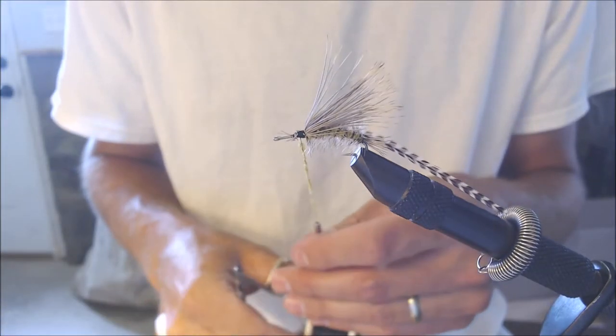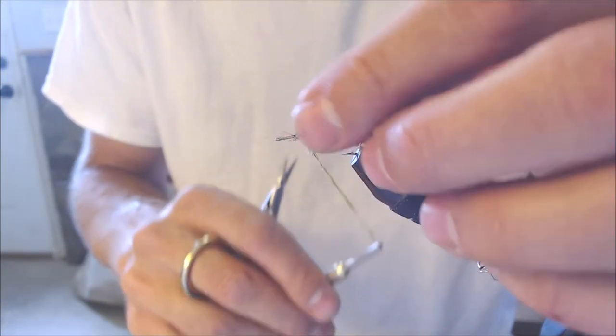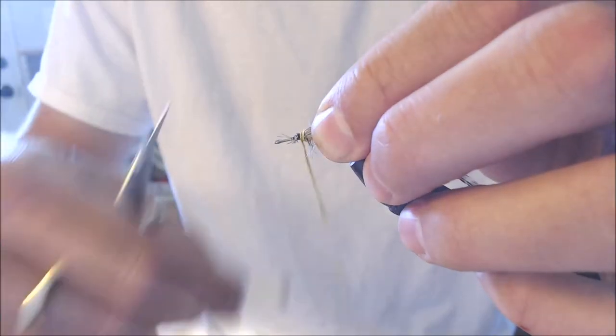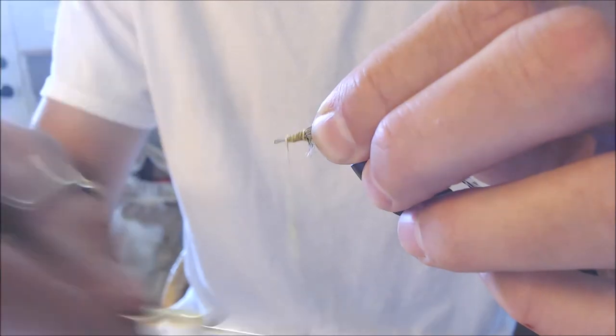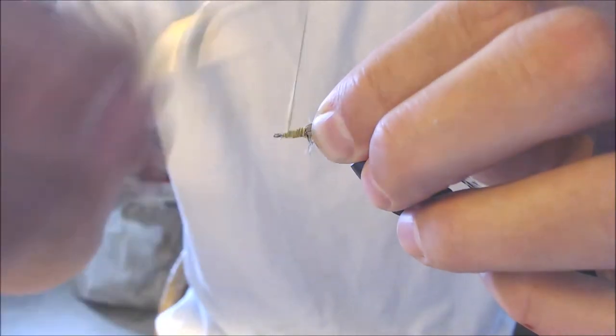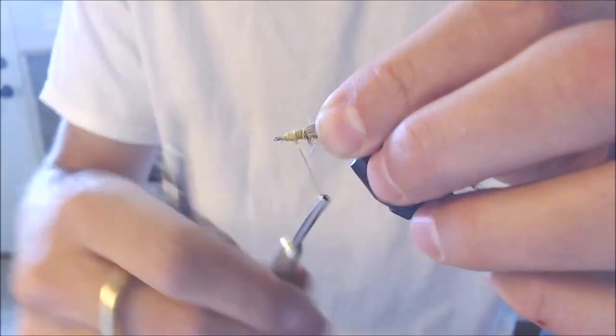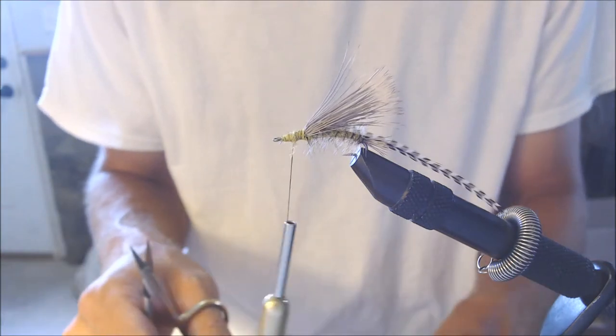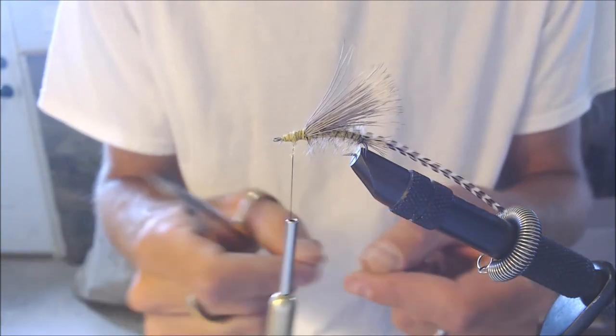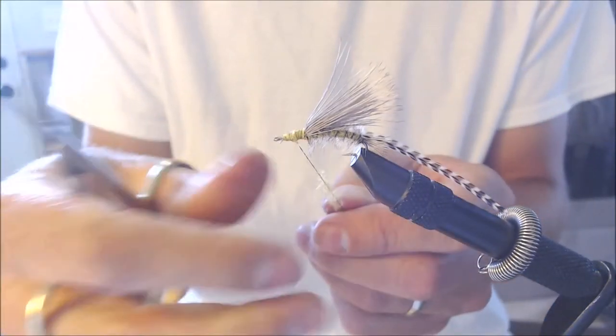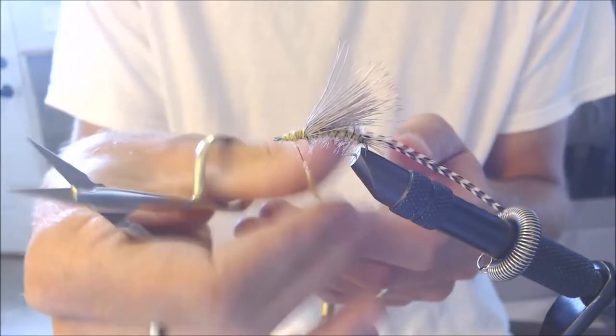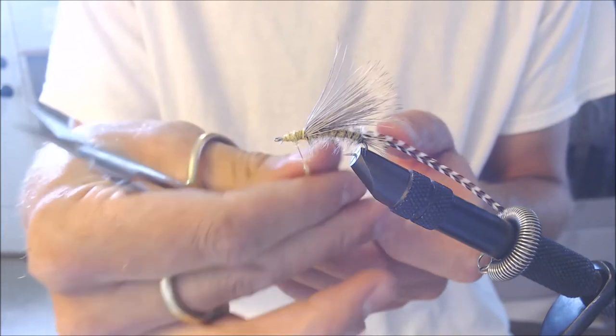Once I've got the dubbing on the thread, I'm going to wrap forward. Try to make it down to the eyelet. And I like to make this... I think I'm going to need just a little bit more. I like to make the head of this with the dubbing a little bit thicker, give it a little bit more body. So, I'm going to tie in just a little bit more dubbing.